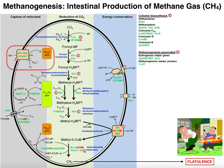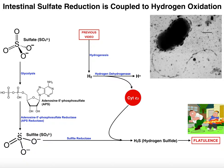There are other compounds that you may have heard of being purported to cause that smell, such as indole and scatol, but it turns out that the major culprit has been determined to be sulfur compounds, such as hydrogen sulfide and other mercaptans. In this video, we're going to discuss intestinal sulfate reduction, and we'll see how this process is coupled to hydrogen oxidation, something we saw in the previous two videos.